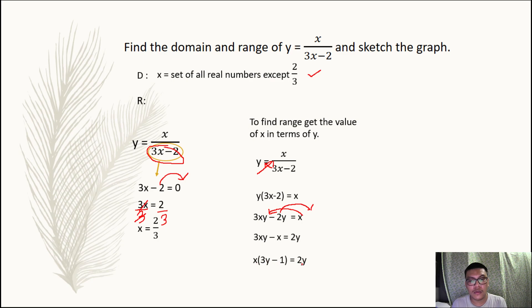Then we're going to factor out x, so we get x quantity 3y minus 1 is equal to 2y. Now to solve for x, we divide both sides by 3y minus 1, then we obtain x equals 2y all over 3y minus 1.